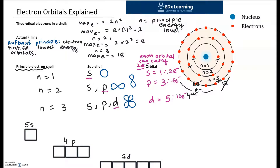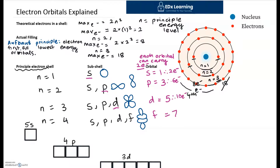When n equals 4, we have S, P, and D subshells, but we also have an F subshell. The F subshell has quite a complex shape. The F subshell has seven orbitals, and thus it can carry a total of 14 electrons.